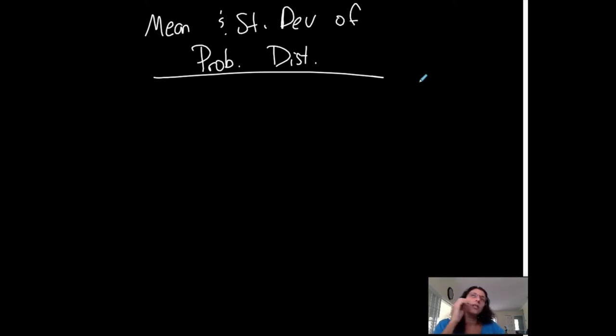The mean and standard deviation of a probability distribution. Prob, D-I-S-T, distribution. The mean and the standard deviation of a probability distribution.